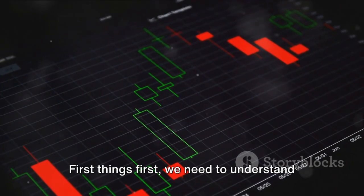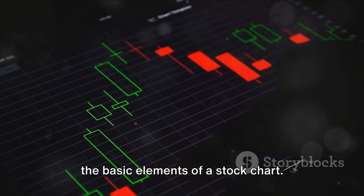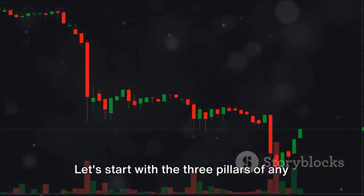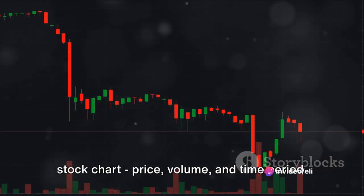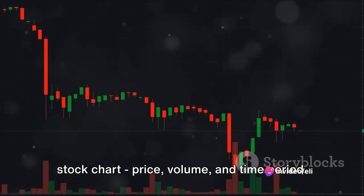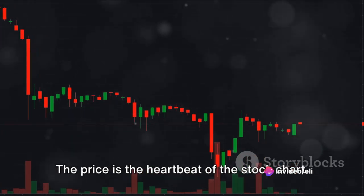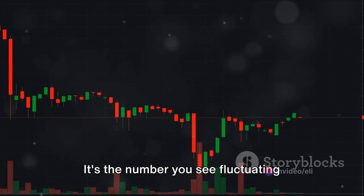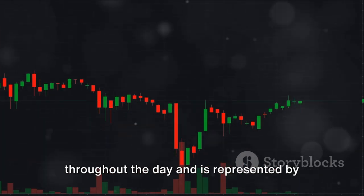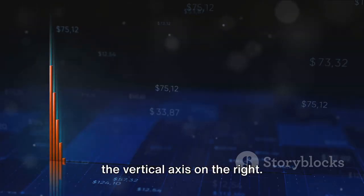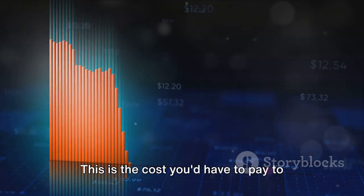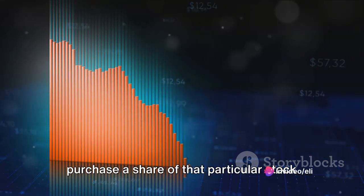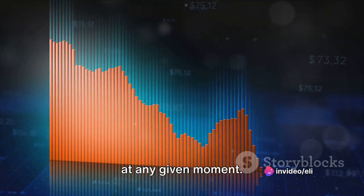First things first, we need to understand the basic elements of a stock chart. Let's start with the three pillars of any stock chart: price, volume, and time period. The price is the heartbeat of the stock chart. It's the number you see fluctuating throughout the day and is represented by the vertical axis on the right. This is the cost you'd have to pay to purchase a share of that particular stock at any given moment.